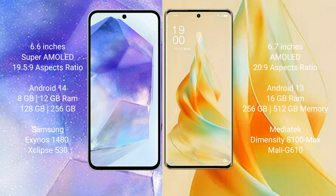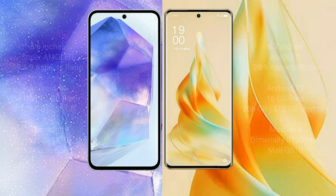Samsung Galaxy A55 comes with 8GB or 12GB RAM and 128GB or 256GB internal storage, with a Samsung Exynos processor and GPU chipset. OPPO Reno 9 Pro comes with 16GB RAM and 256GB or 512GB internal storage, with a MediaTek Dimensity 8100 Max processor and Mali-G610 GPU.